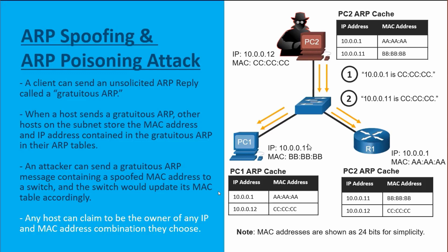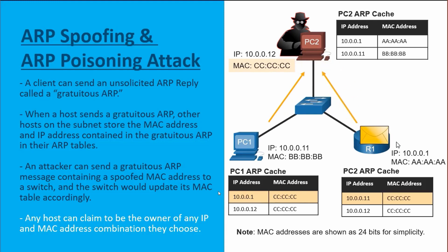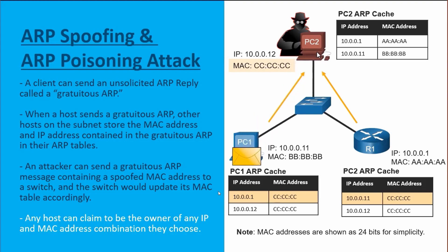When the router responds to 10.0.1.1, it will be responding to the Layer 2 target — the MAC address of all-C's — which is again going to be the threat actor. So what it comes down to is this: PC1 will want to send data to 100.1, and to do so it'll send it to the MAC address of all-C's, which is PC2. PC2 forwards that data onto the router. The router sends it outbound. As the router responds back to 10.0.1.1, it'll be targeting all-C's — the MAC address of the threat actor. This is a man-in-the-middle attack.